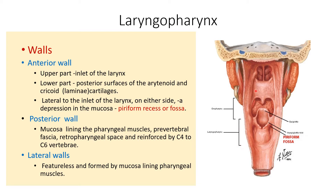The posterior wall, which is opened in this picture, consists of the mucosa lining the pharyngeal muscles, the pre-vertebral fascia, and the retropharyngeal space, all reinforced by C4 to C6 vertebrae. The lateral walls of the laryngopharynx have no specific features and are formed by the mucosa lining the pharyngeal muscles.